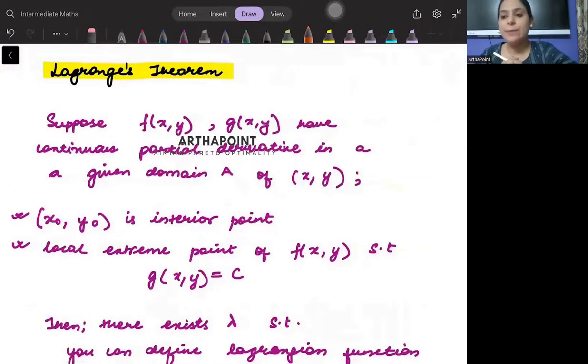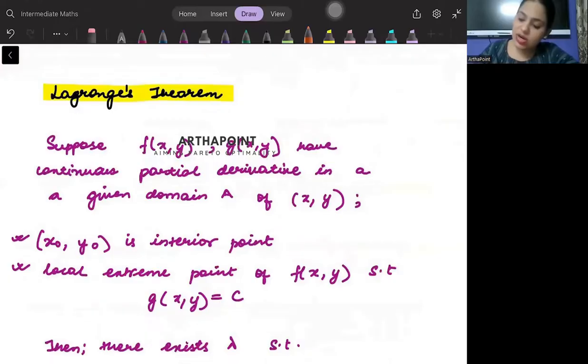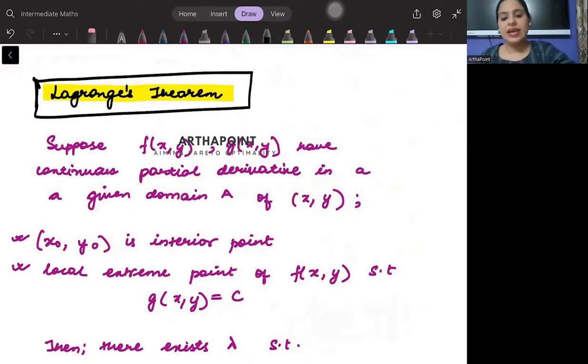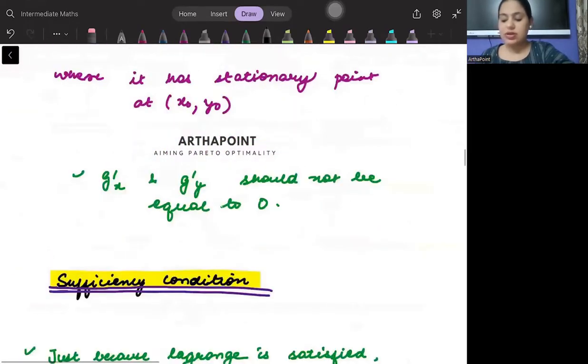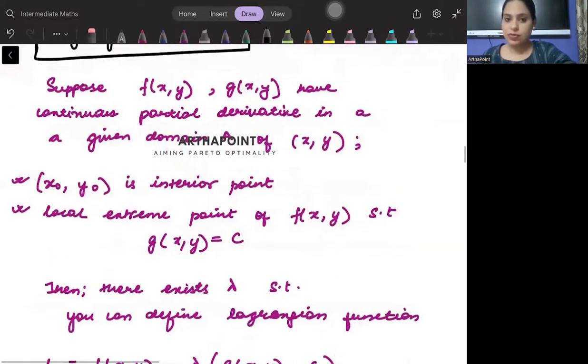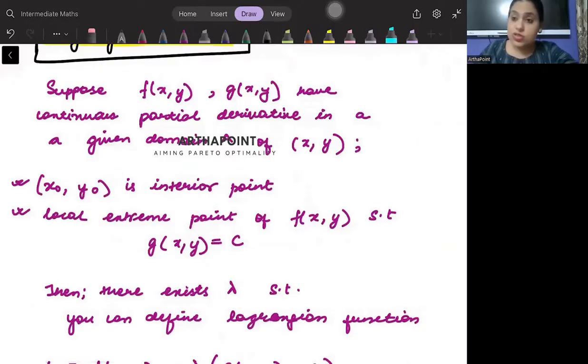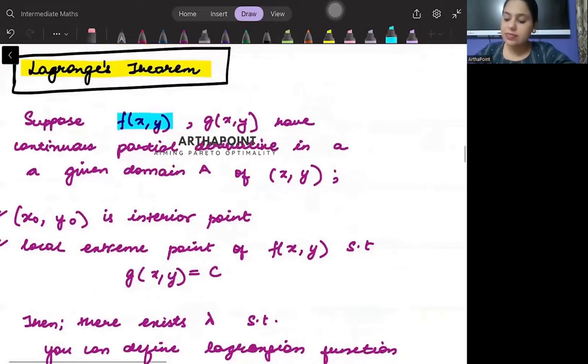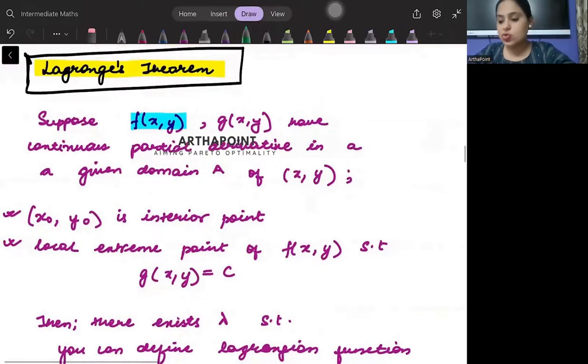Now we come to an important theorem, but this is called as Lagrange's Theorem. Try to see from the start. Suppose in the syllabus, you will see that it only says only statement. Lagrange's proof is not important. You should only know the statement.